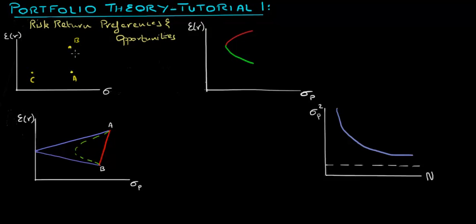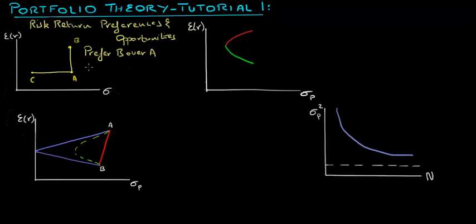Suppose we have three assets, A, B, and C, and let's say we know the expected return and volatility of each of the three assets. Comparing Asset B to Asset A, investors would prefer Asset B over Asset A, and the reason is that even if A and B have the same volatility, the expected return of B is greater than the expected return of A. Similarly, when comparing Asset C to Asset A, investors would prefer C over A, and that's because even if A and C have the same expected return, Asset C has much lower volatility than Asset A.